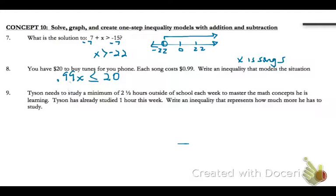Now if we were to solve that, we would just divide each side by 0.99. So x would be less than or equal to 20.2 songs, but we wouldn't want to buy 0.2 of a song. So we could say 20 songs.